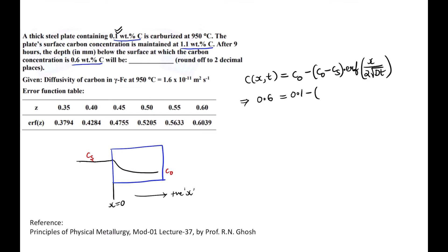C₀, as I told you, the initial average concentration of the plate itself which is 0.1, minus (C₀ is again 0.1 minus Cs is 1.1, correct). Cs is nothing but the carbon concentration on the surface, so it is 1.1 times erf(x/(2√Dt)). So now our first task is to actually calculate this particular error function.